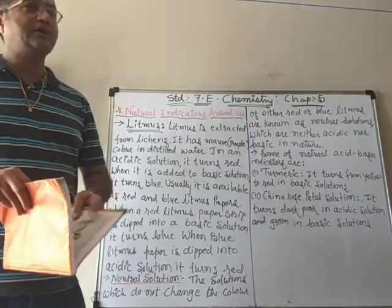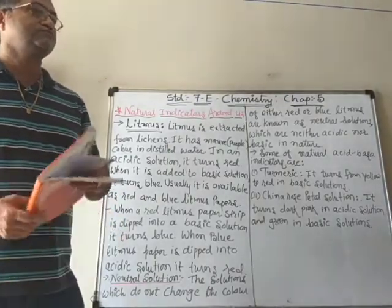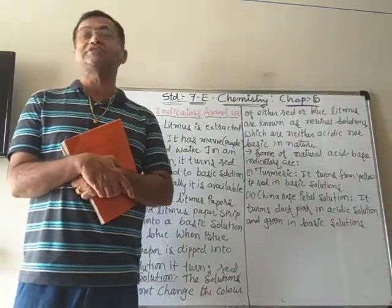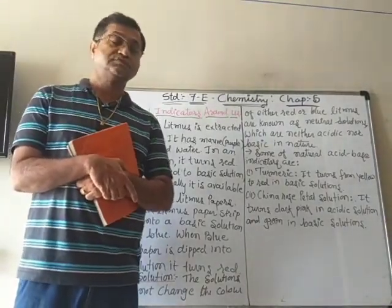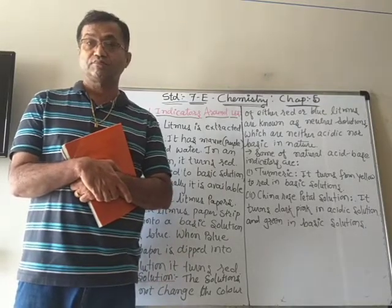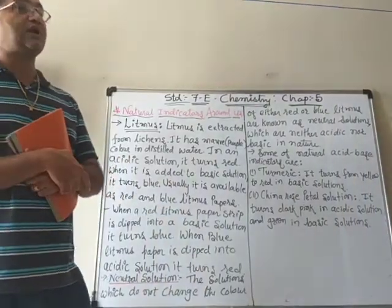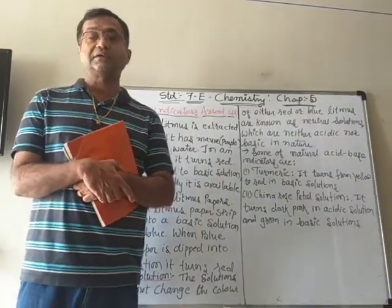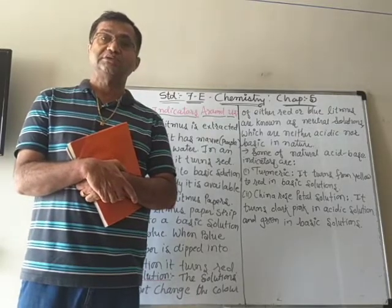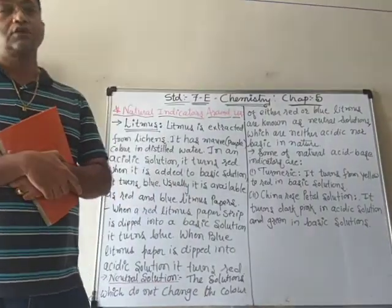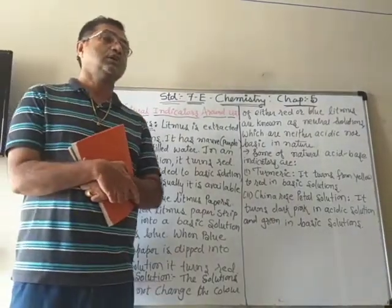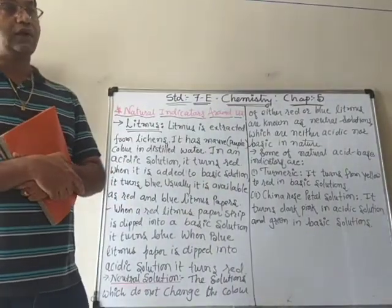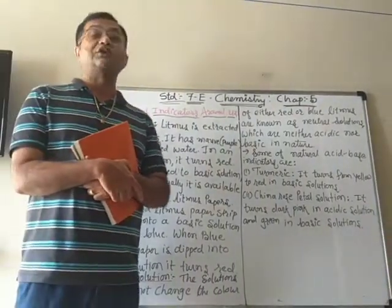In the beginning, we learned that the substances which taste sour, they are Acids. We can say that they are Acid in nature, like Lemon Juice, Tamarind, Orange, Raw Mango, and Vinegar, etc.